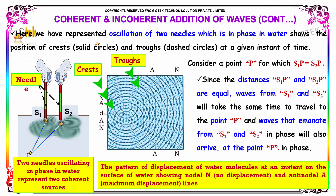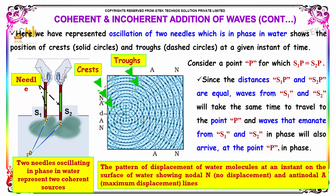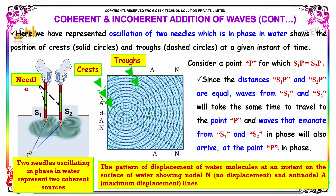Here we have represented the oscillation of two needles which are in phase. In water, the solid circle shows the position of crests and the dashed circle shows troughs. You can see the dashed line and solid line here at a given instant of time.